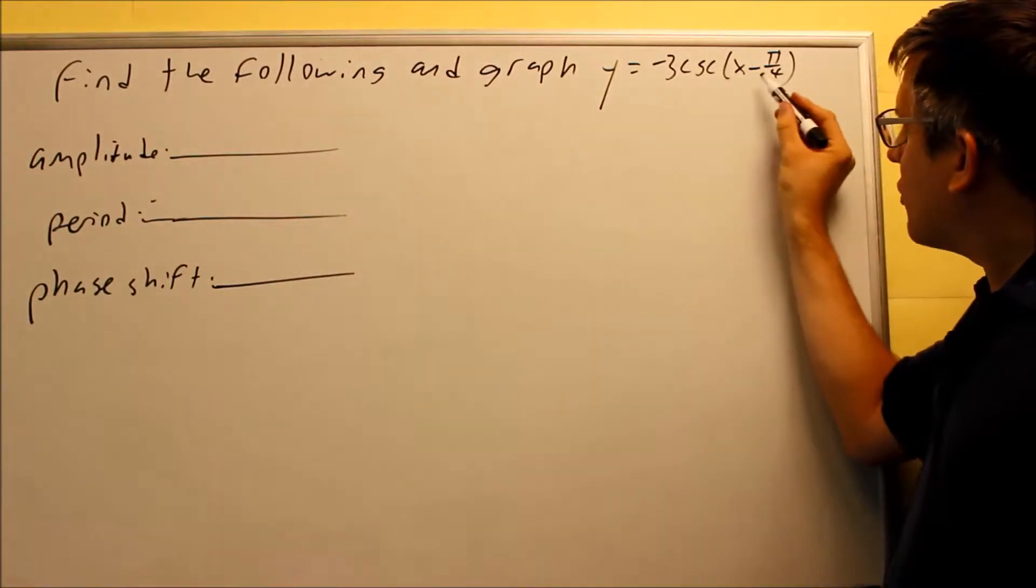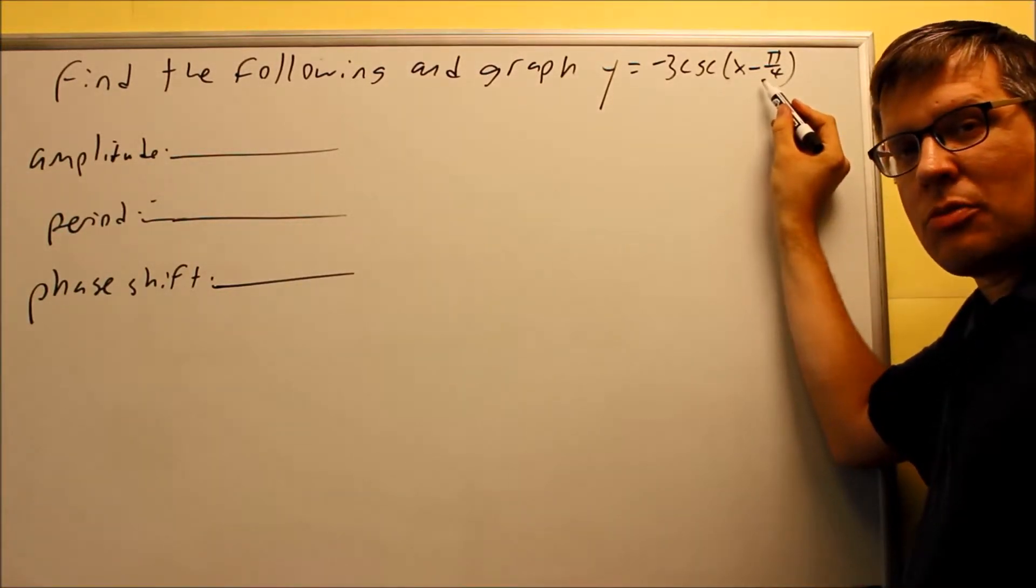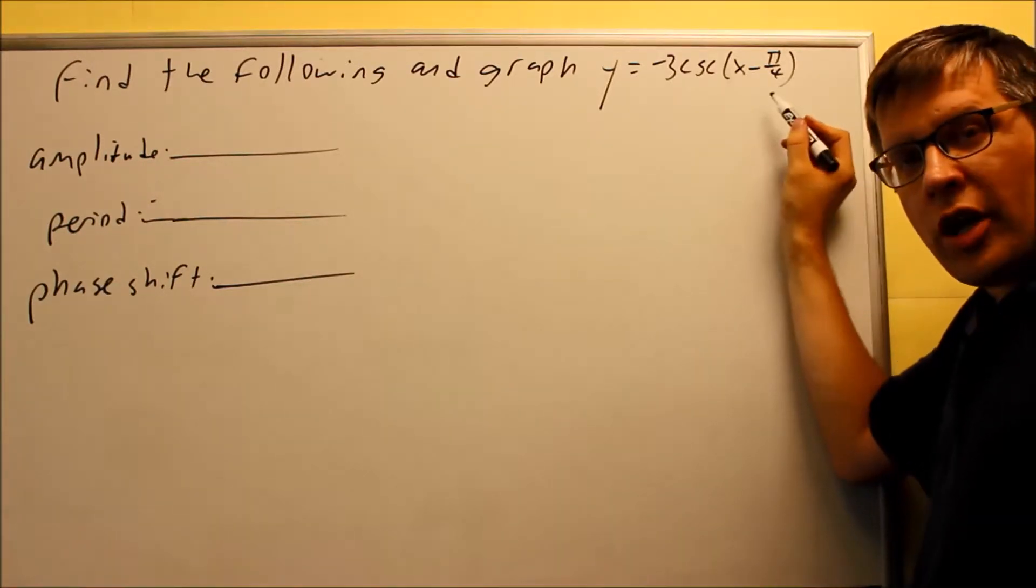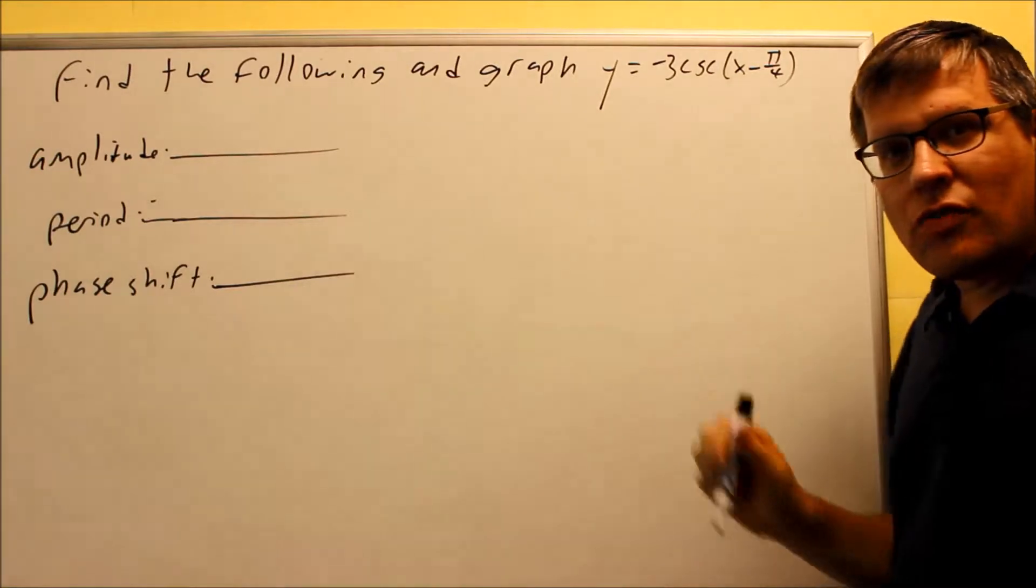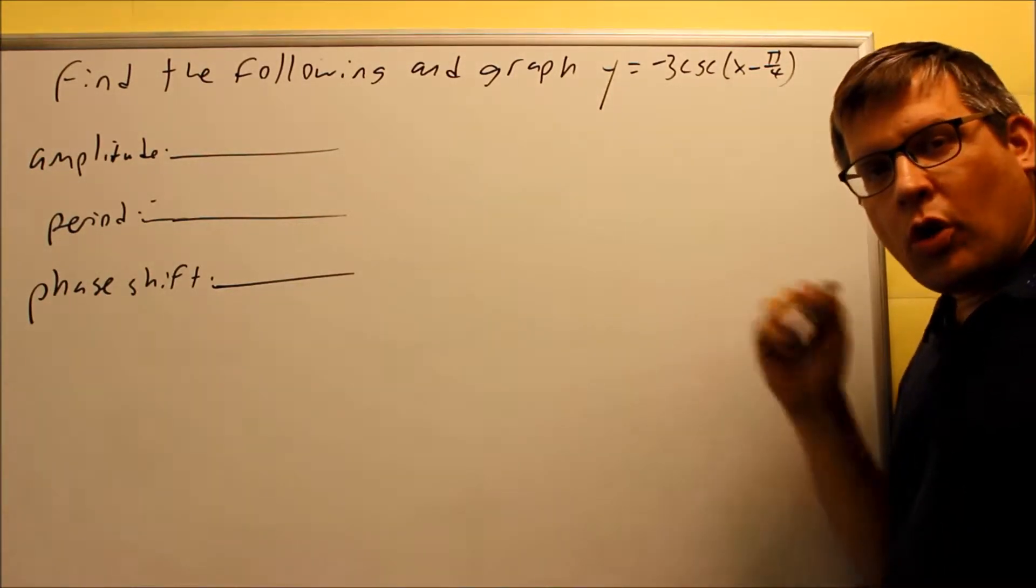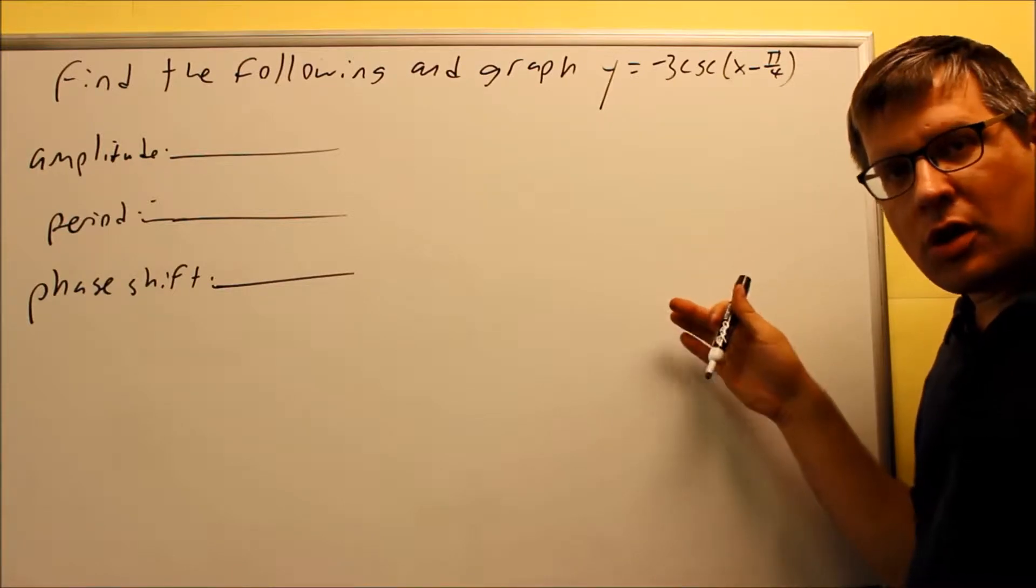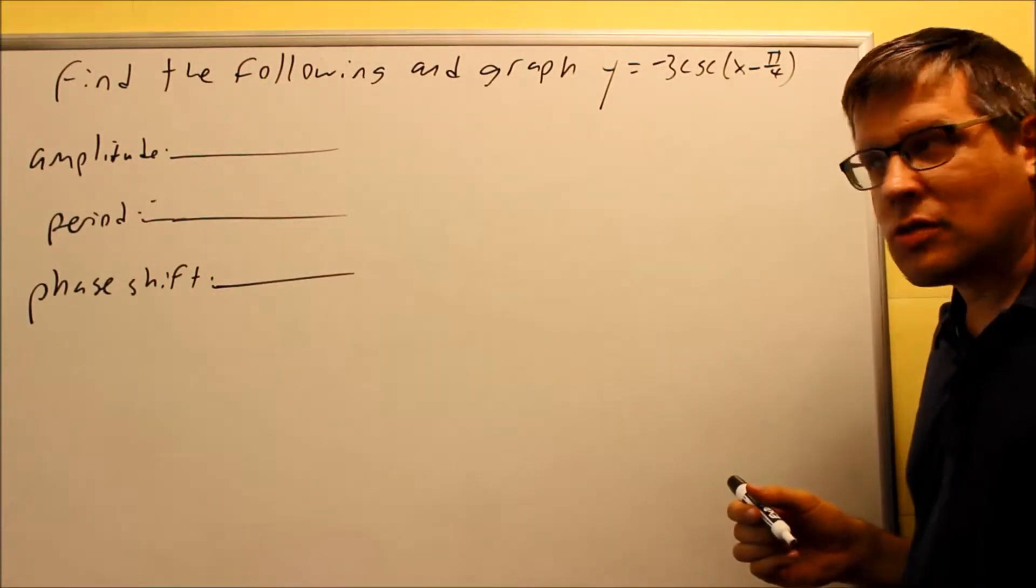So the graph is going to move opposite direction of the sign that I see here. So because I have a minus sign, that means the graph is going to end up moving to the right. Now when I find my phase shift, that's automatically going to tell me where the graph is going to begin. So I don't have to worry about which direction it's going to go in because my phase shift automatically tells me where the graph begins.